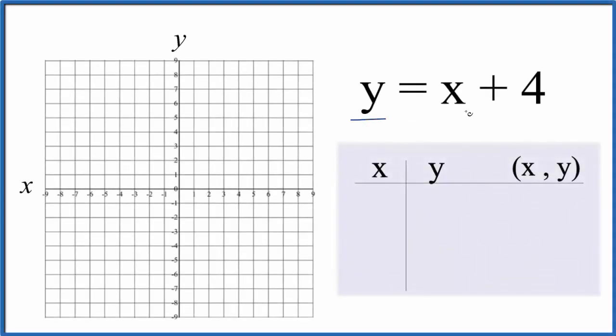Let's graph the linear equation y equals x plus 4, and we'll do it two ways. First we'll plug in values for x, get the y values, and then we'll graph those values. After that we'll check our work with the slope-intercept formula y equals mx plus b.